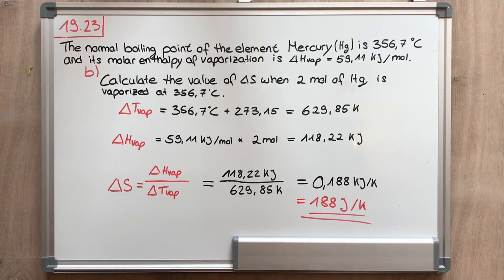For the correct entropy of vaporization in this exercise, we have to multiply the given entropy of vaporization by 2, because we got 2 mol of mercury. So we got 118.22 kilojoule.